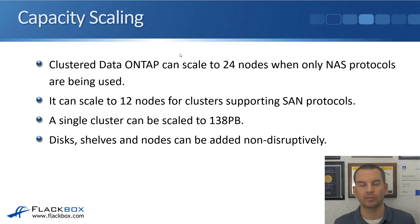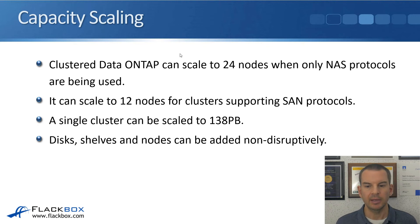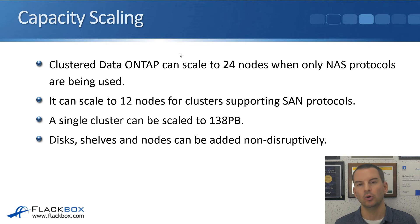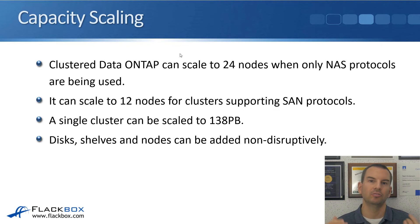Clustered Data ONTAP — now just known as ONTAP — can scale to 24 nodes when only NAS protocols are being used. If you're running SAN protocols, it can scale to 12 nodes. If you're running both SAN and NAS, that is also 12 nodes. ONTAP can support all different protocols at the same time. A single cluster can be scaled to a maximum of 138 petabytes as of this recording, and that will grow over time. Disk shelves and nodes can be added non-disruptively, so you can start with a small system and grow it over time without disrupting current operations.